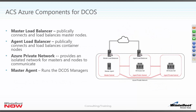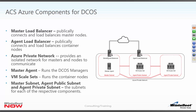On Azure, DCOS has a very similar architecture to Docker Swarm — master load balancer and master agents, with a VM scale set for the public side. It adds a VM scale set for the private side as well, which doesn't have a public load balancer. The master agent connects to that private subnet. So you could put your edge applications on the public side and your database services on the backend private subnet. In Swarm you can achieve similar schemes by setting up networks within the Swarm environment, but DCOS configures it this way out of the box.